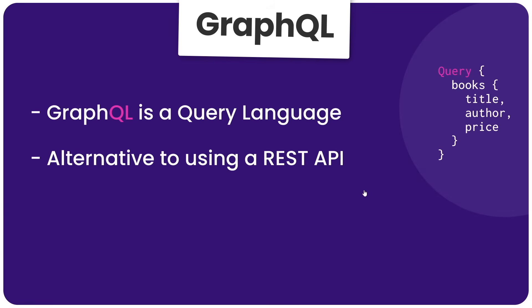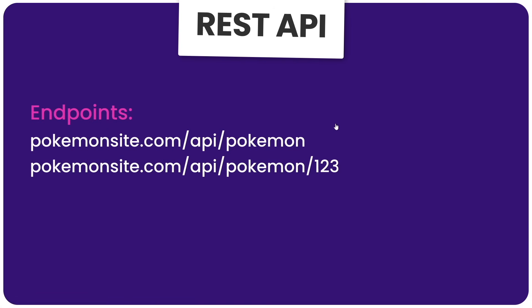Let's take a quick look at the differences and see why in some cases GraphQL has the edge. When we use a REST API, we typically send HTTP requests to specific endpoints to interact with a certain type of data. For example, we might send a GET request to fetch a list of Pokémon, a POST request to add a new Pokémon, a GET request with an ID to fetch a single Pokémon, or a DELETE/PUT request to delete or update data.